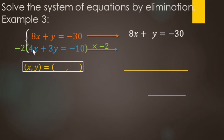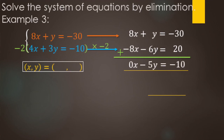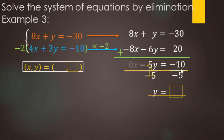Multiplying the bottom equation by negative 2: negative 2 times 4x makes negative 8x; 3y times negative 2 makes negative 6y; negative 10 times negative 2 makes positive 20. Now adding straight down: 8x minus 8x is no x's — eliminated. Y minus 6y is negative 5y. Negative 30 plus 20 is negative 10. So negative 5y equals negative 10. Divide by negative 5: negative 5 over negative 5 is 1y, negative divided by negative is positive 2. Y equals 2.